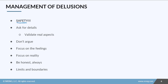For delusions, safety is first again — depending on the delusions, safety can be a huge issue, especially with paranoid delusions. We do want to ask them for details about their delusions and validate any parts of them that are real. In reality, sometimes delusions are based on something real and then escalated to something more extreme.